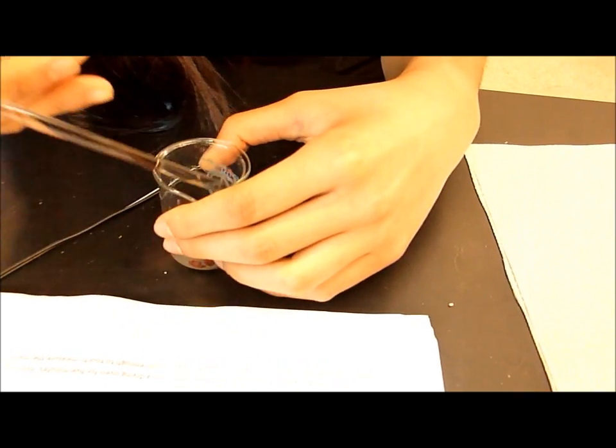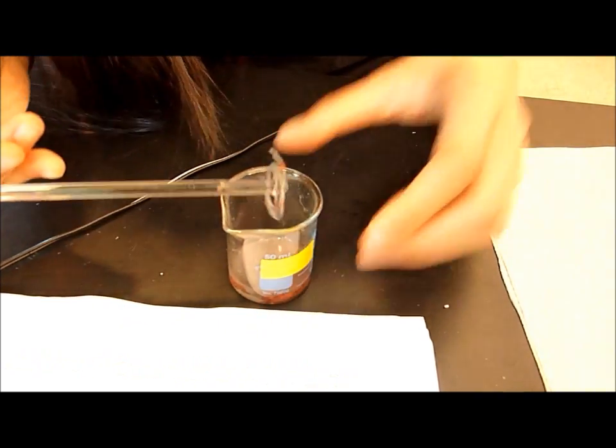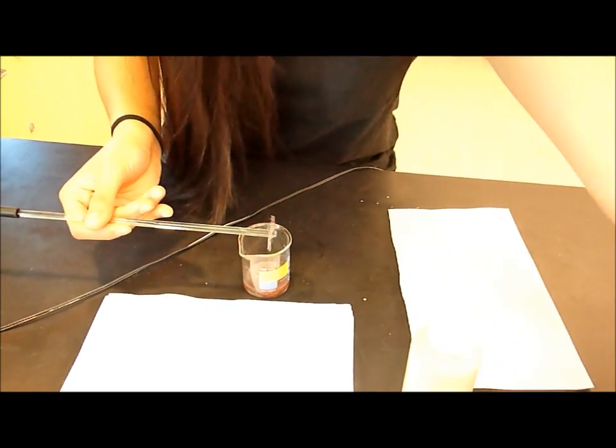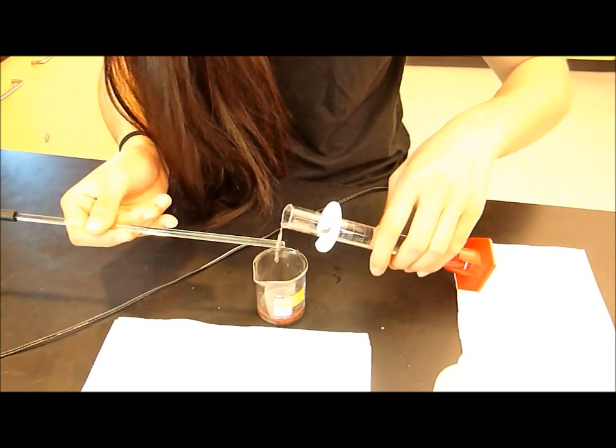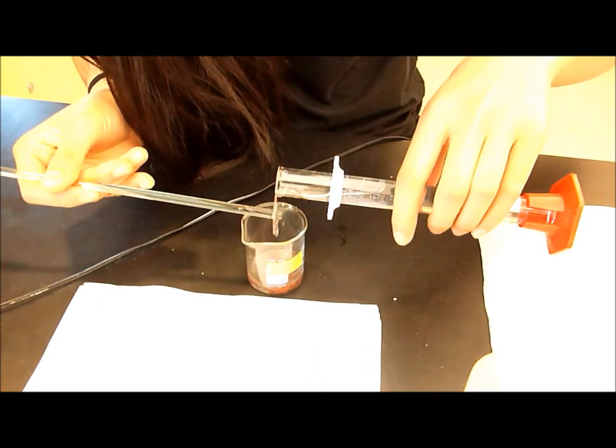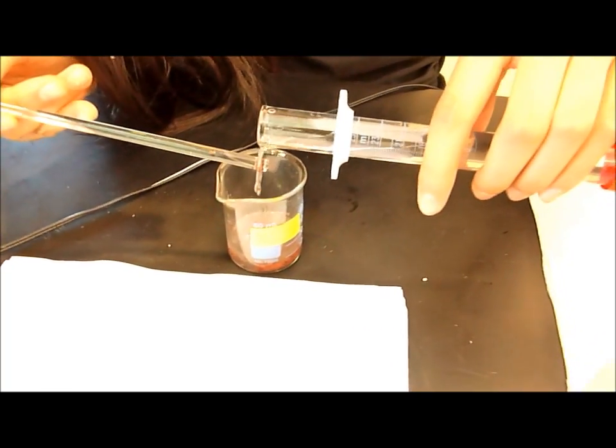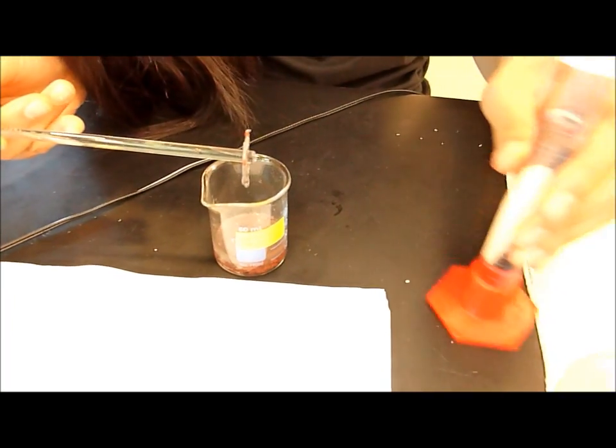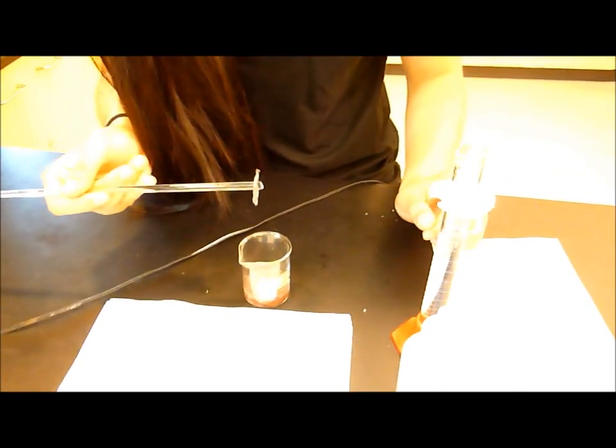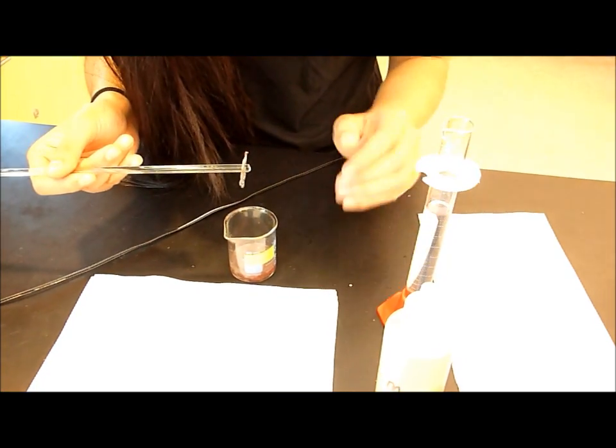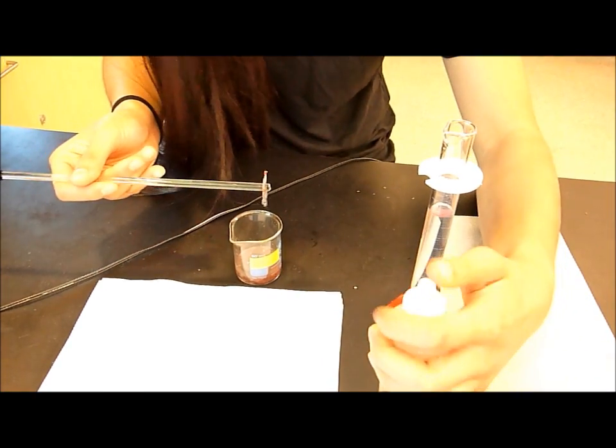Then, rinse off any remaining copper with distilled water into the solution. If any of the copper refuses to wash off the aluminum wire, wash it with one or two drops of six-molar hydrochloric acid solution.